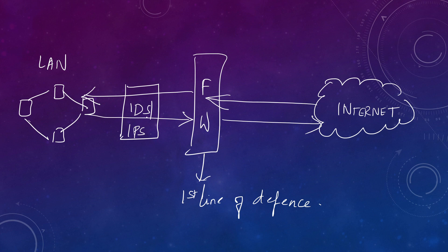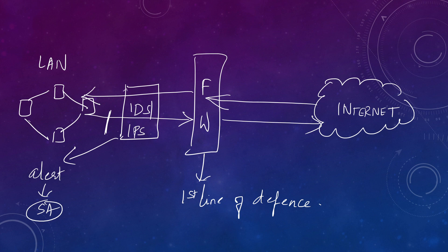IDS just detects - even if traffic is allowed inside the internal network, it creates an alert to the security administrator. IPS, if there is an intrusion which is not regular activity, prevents it from entering the internal network. It is better for an organization to have both a firewall and an IDS/IPS together for a better protected and secured environment, as their functionalities are different and complementary.